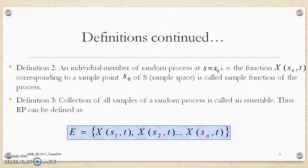Third definition of random process: collection of all samples of a random process is called an ensemble. Thus, random process can be defined as capital E equals X(S1,T), X(S2,T), till X(Sn,T).